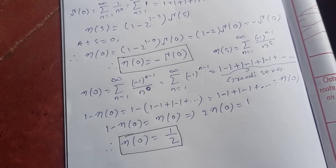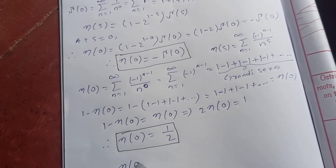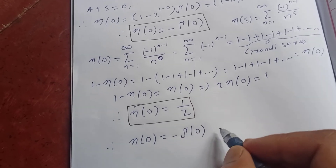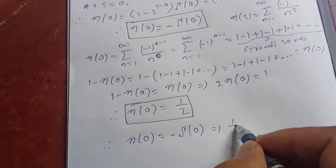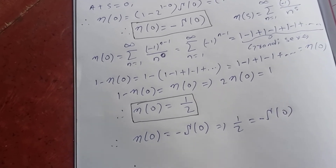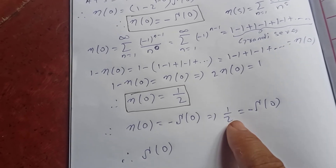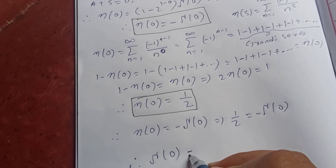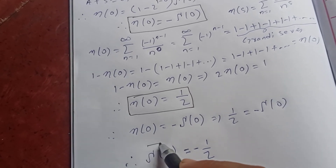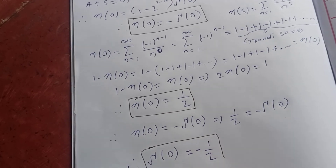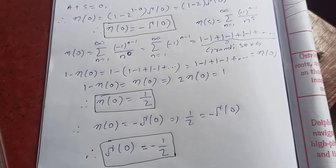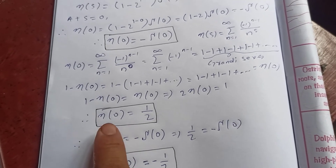Now substituting back: eta of zero equals negative zeta of zero. So one half equals negative zeta of zero. Multiplying both sides by negative one, we get zeta of zero equals negative one half. This is the value of the Riemann zeta function evaluated at zero.